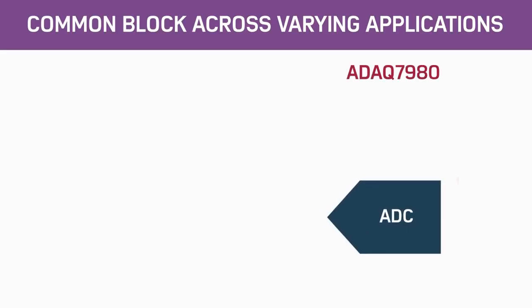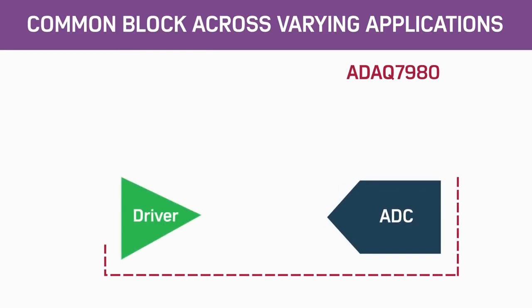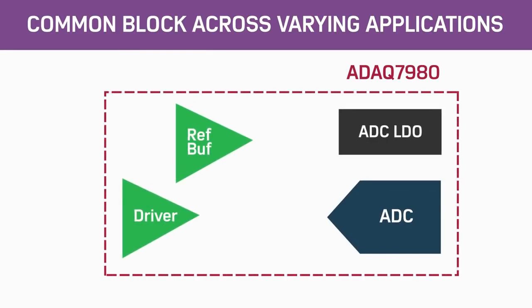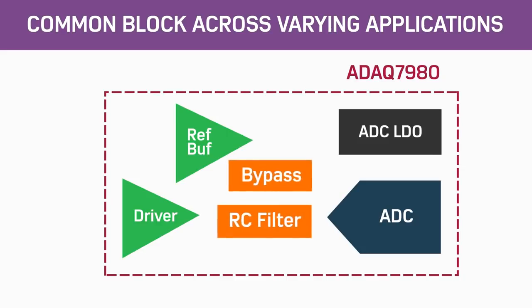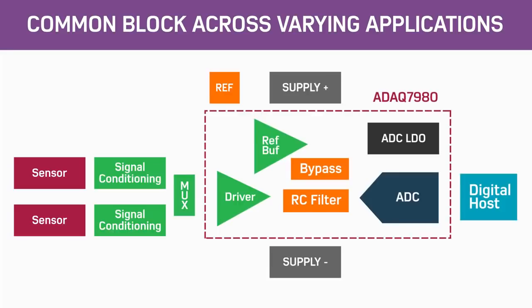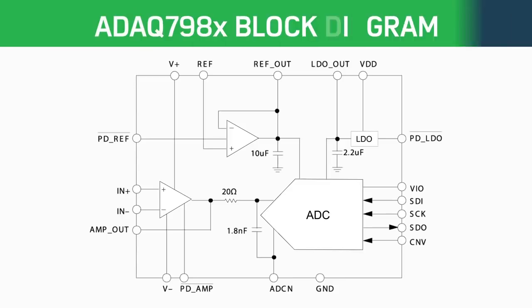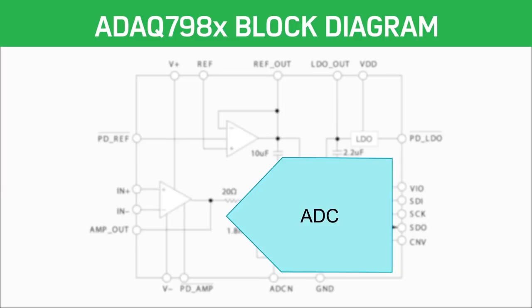The ADAQ7980 product family combines four common signal processing and conditioning blocks to support a variety of applications. The device contains the most critical passive components, simplifying the design process compared to conventional signal chains that utilize SAR ADCs. All active components in the circuit are designed by Analog Devices, including a high accuracy, low power, 16-bit SAR ADC.